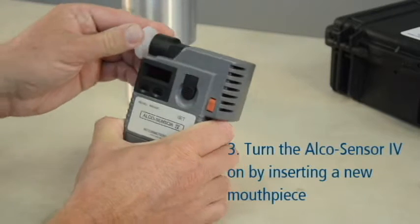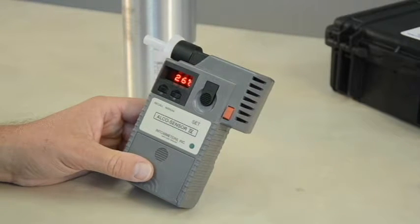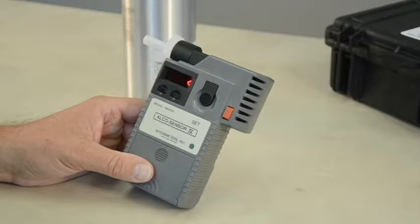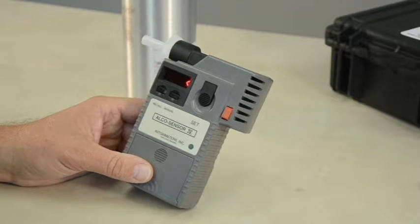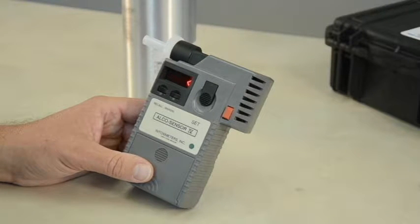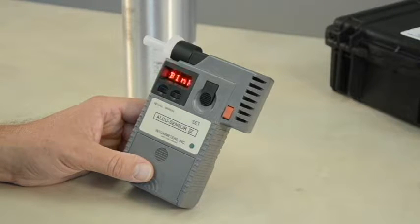Turn the Alkosensor 4 on by inserting a new mouthpiece. The temperature will display. The display will flash the back and forth arrow signs and the word WAIT will appear. The device will then display BLNK. This means the instrument is performing an air blank on the device.